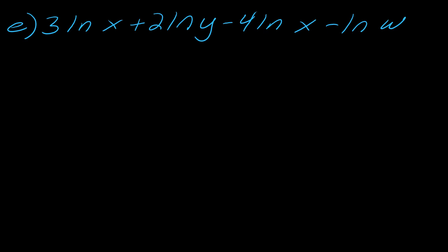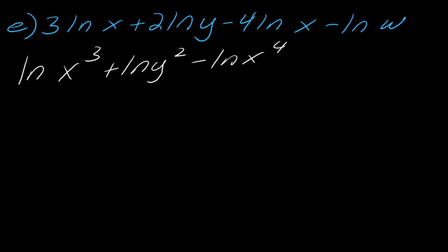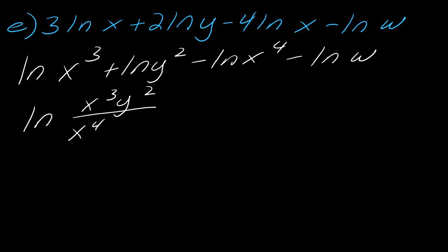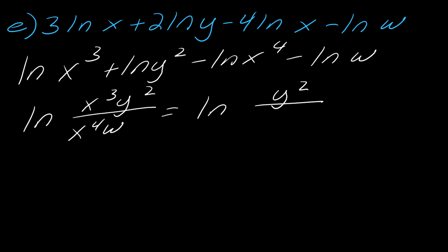I have one more example using natural logs — pause and hit play when ready. To rewrite this as a single logarithm, first bring in the exponents. Then apply the rule: plus signs go on top, minus signs go on bottom. This gives the natural log of x cubed y squared over x to the 4th times w. You can also simplify by combining the x terms: 3 natural log x minus 4 natural log x leaves x in the denominator, giving the natural log of y squared over xw as the final simplified answer.